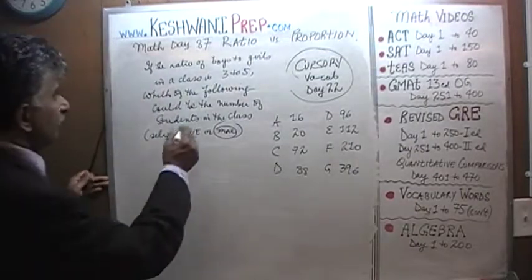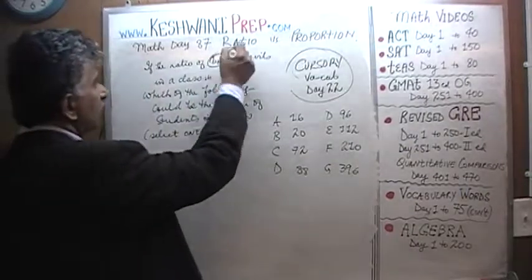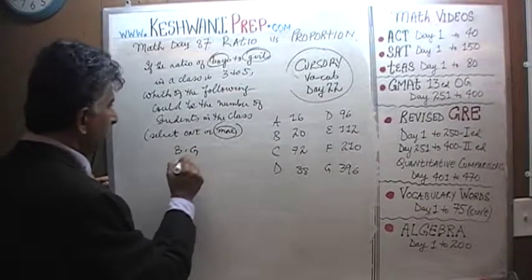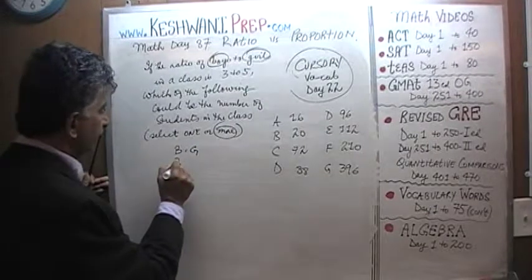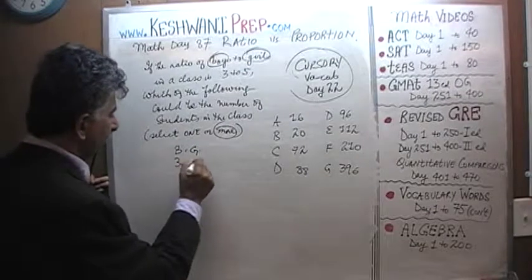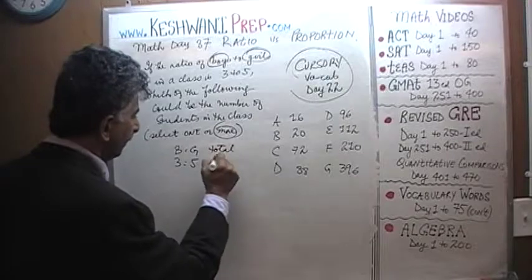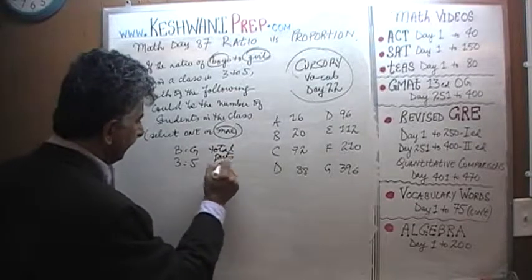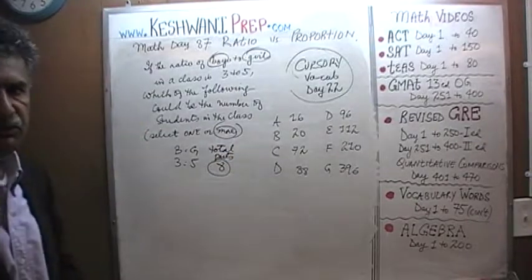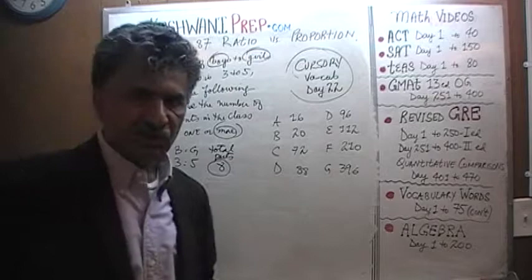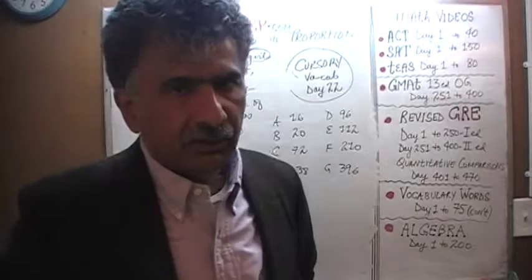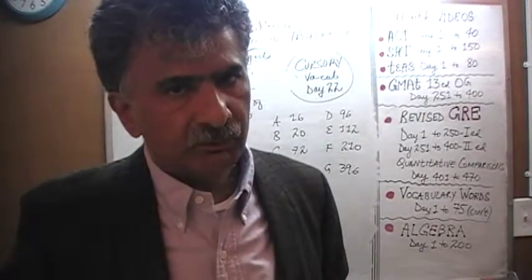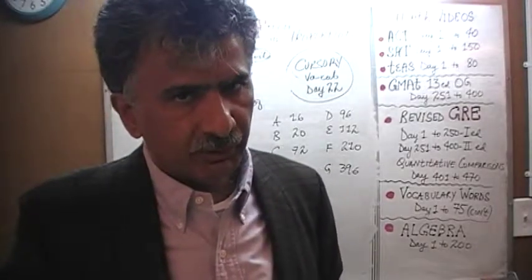We are told the ratio of boys to girls is 3 to 5, which means the total parts are 8. Since there are 8 total parts, the total number of students — whatever it is — must be divisible by 8.